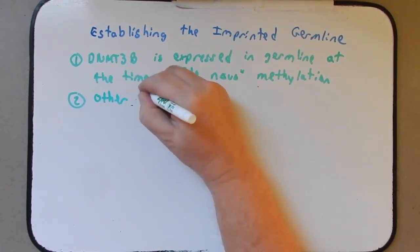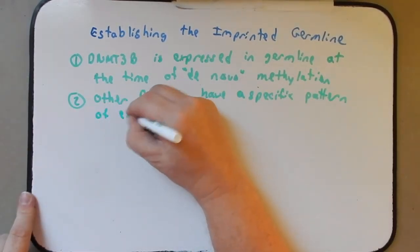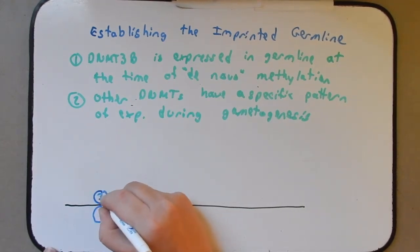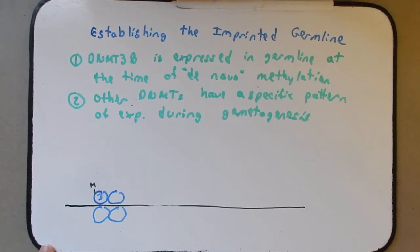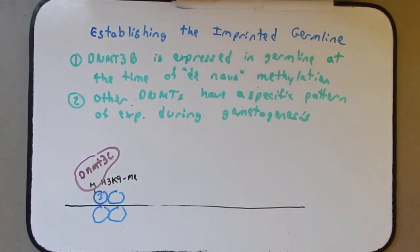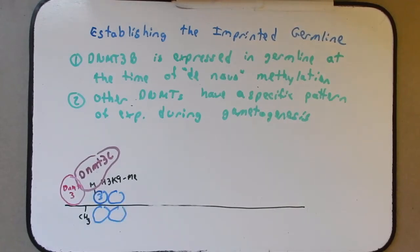Now, other DNMTs have a specific pattern of expression during gametogenesis. Now, I want to talk about specifically DNMT3L and I want to remind you what DNMT3L does from earlier in the semester. And so, real briefly, I'll draw it down here, we have our chromatin structures here with our histones and we'll make this one histone 3. When histone 3 is methylated at lysine 9, so H3K9, DNMT3L will bind that methyl group. And when it binds that methyl group, it brings in DNMT3 because DNMT3 binds to DNMT3L. As DNMT3 comes along here, it will methylate the DNA which then turns this gene off or sets the stage for keeping that gene turned off.